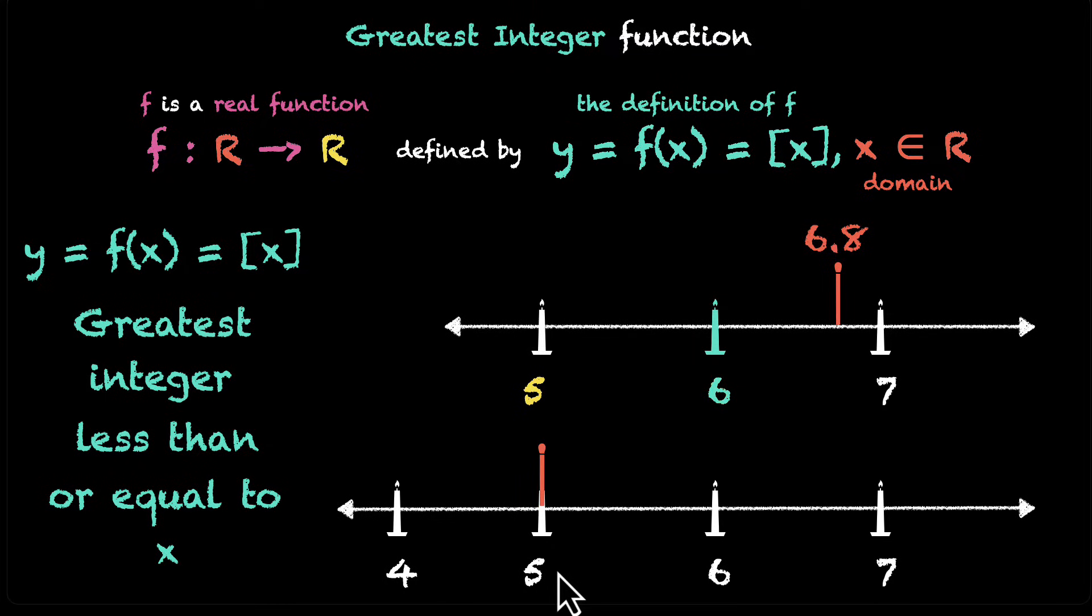Attention to detail is important here. So, it's going to give you an integer that's less than or equal to x. Which are the integers that are less than 5? Well, there are 4 and 3 and 2 and so on. But, is there an integer that's also equal to 5? Yes, of course, 5 is equal to 5.